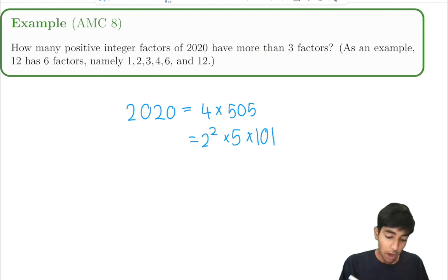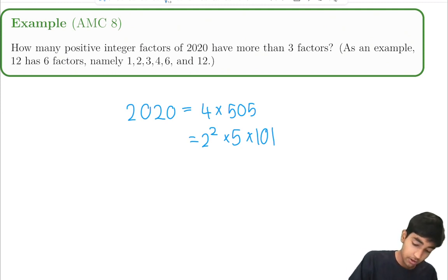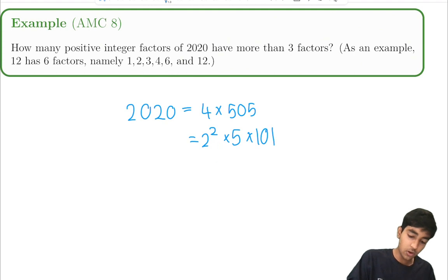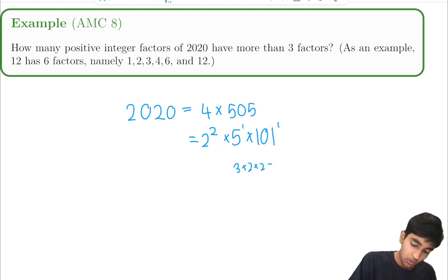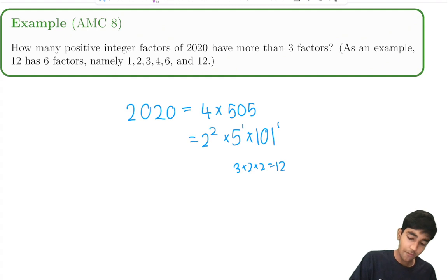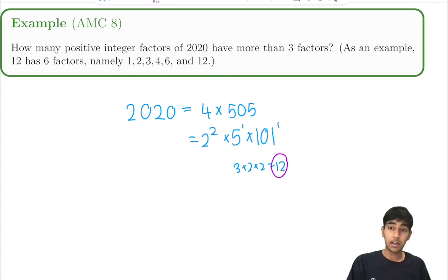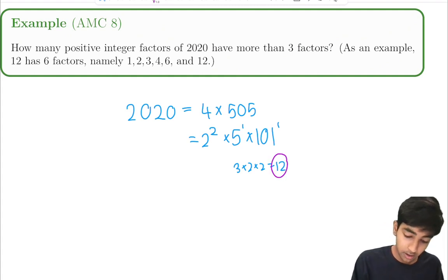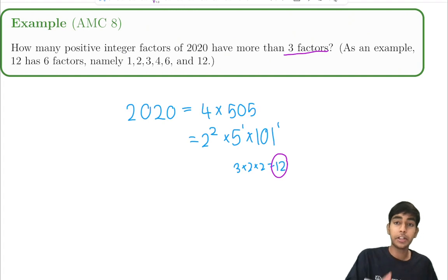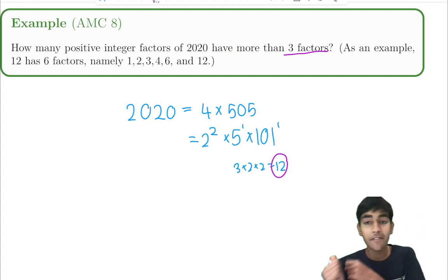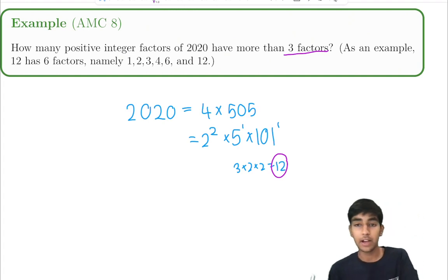So that's the prime factorization. Now, how many factors does 2020 have? Just add 1 to all the exponents: 3 times 2 times 2 equals 12 total factors of 2020. But that's not our answer, because the problem asks how many factors of 2020 have more than 3 factors.